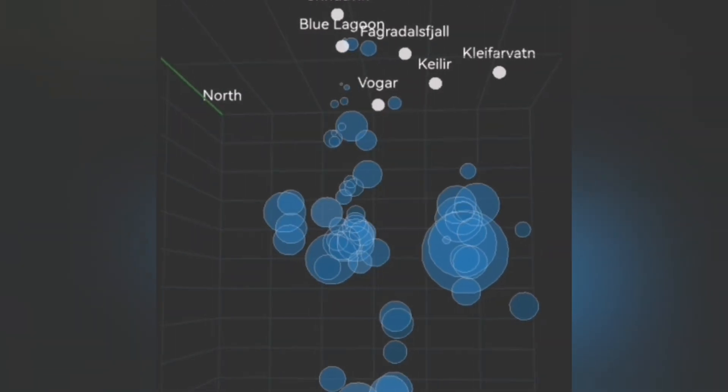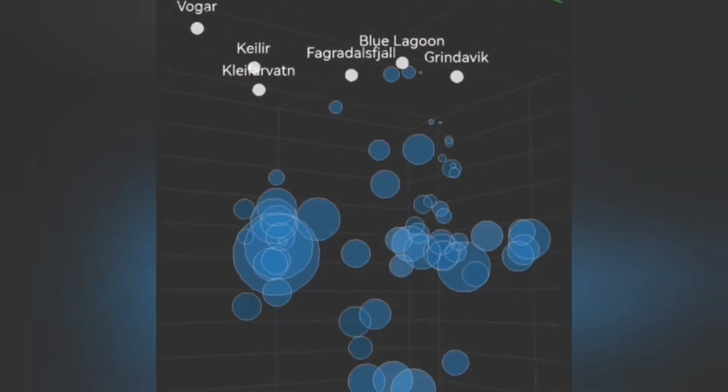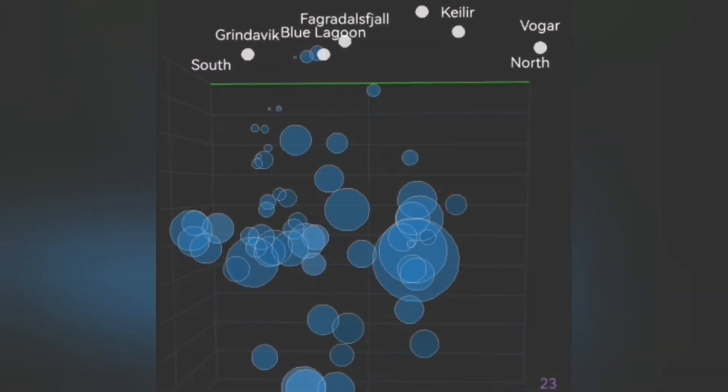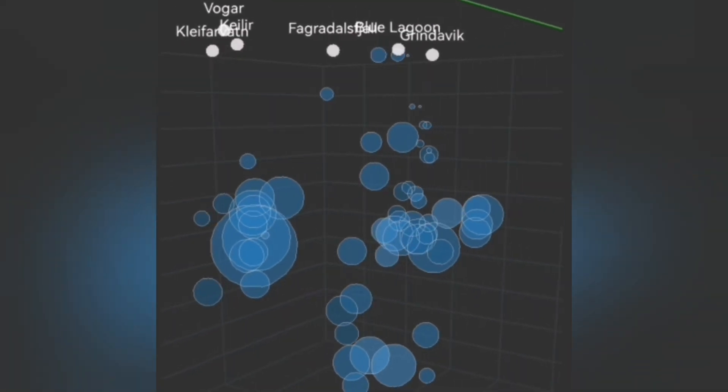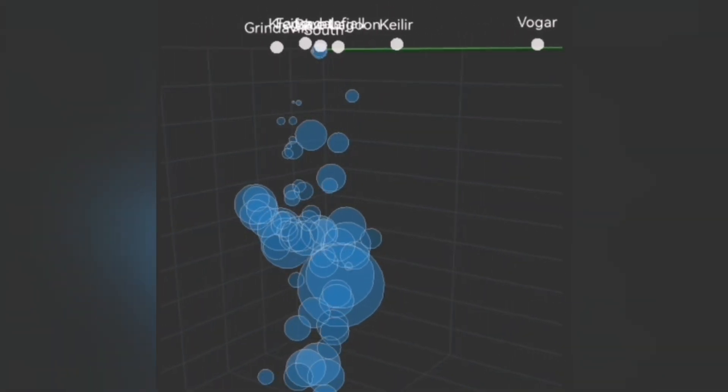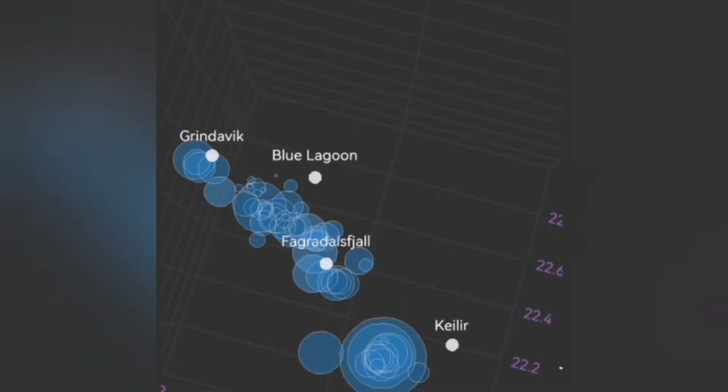Up to now, what we had at the depth of 5 km was the fault lines transferring the movement from the Svartsengí toward the east. And that was the reason we had earthquakes at the Krýsuvík and Kleifarvatn area.